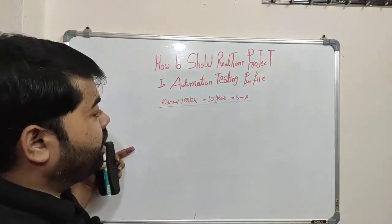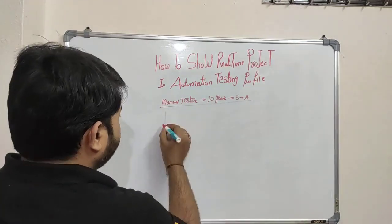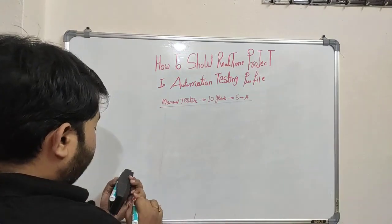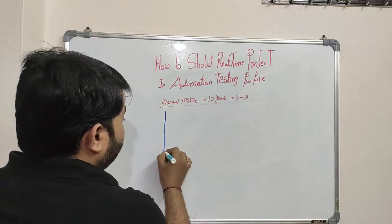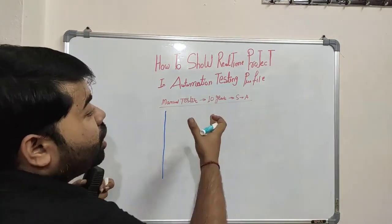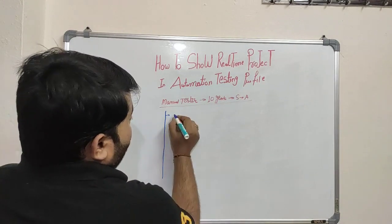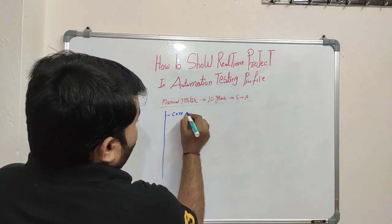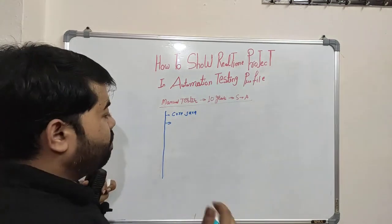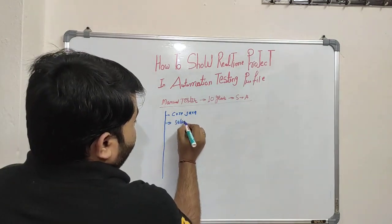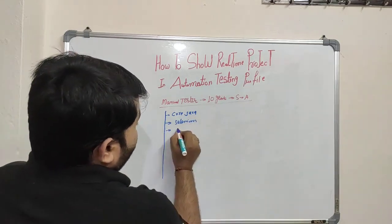In the current market, you have to prepare well because you are going in as experienced. First of all you have to learn a programming language, then you have to learn Core Java, then you have to learn a web automation framework like Selenium, and then you have to learn Cucumber.